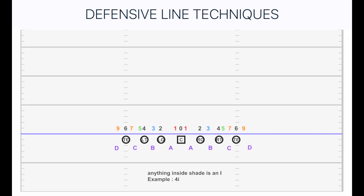Then we have five techniques — these are going to be outside the tackles. Anything outside the right tackle is a five technique, and outside the left tackle is a five technique as well. And of course you have the nine techniques out of the tight ends — odd numbers outside — so nine and nine.